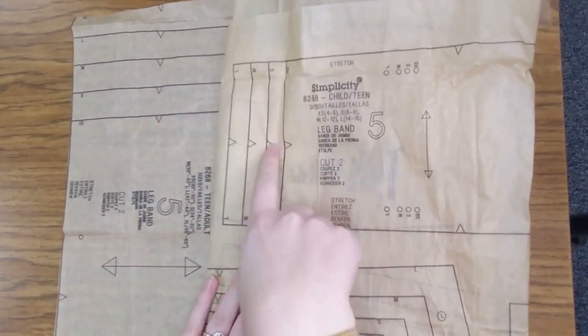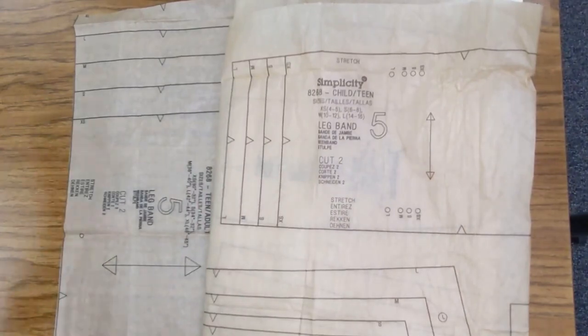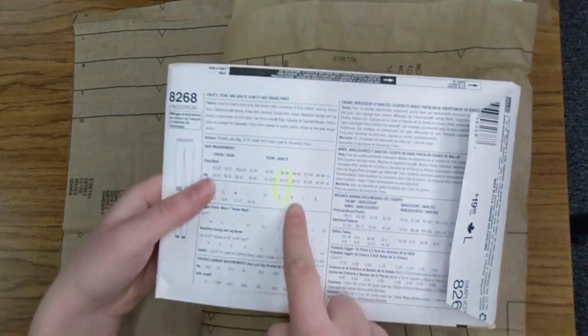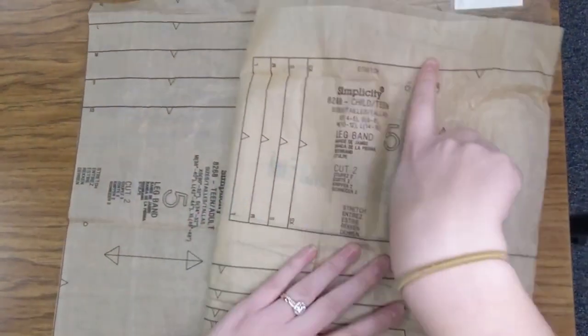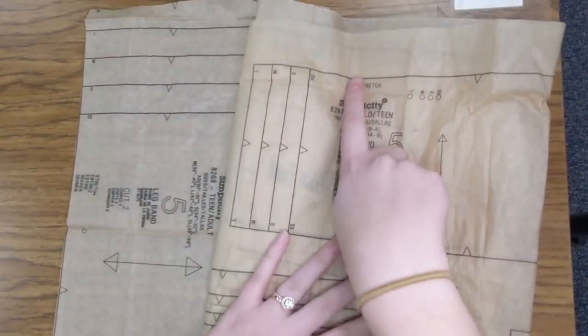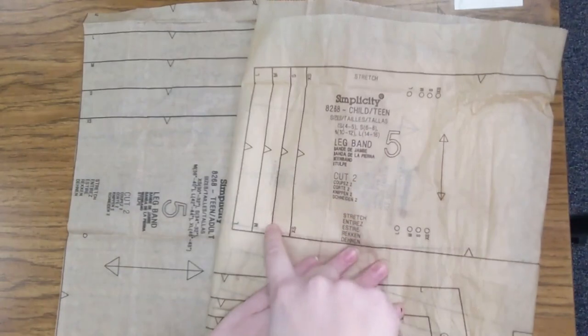And you'll see it has different sizes: extra small, small, medium, large. You should have already picked which size you're doing and circled it. So I'm doing a small, so I know that if I was cutting this out, I would cut along this line, because that's kind of like a one-size-fits-all line. And then I'd go down this small line.